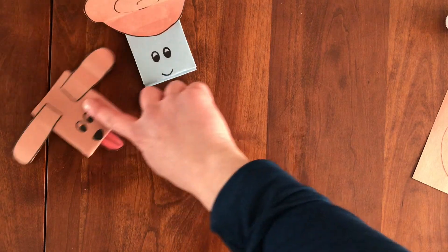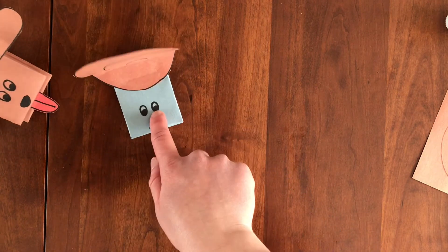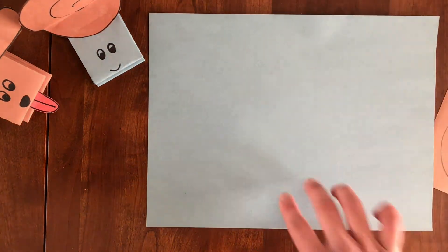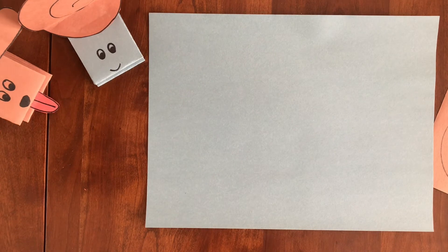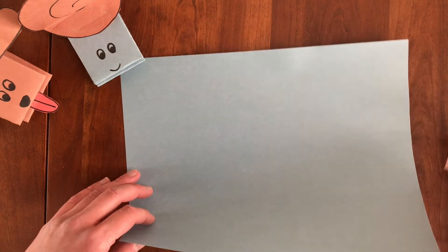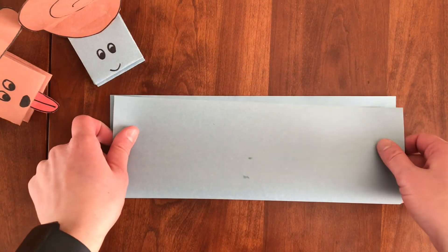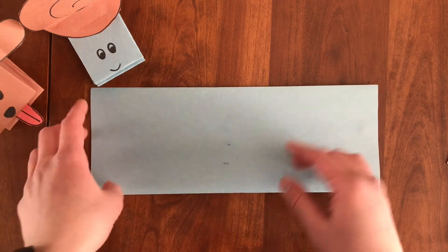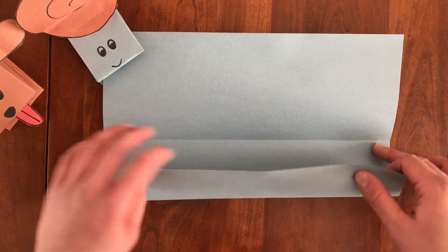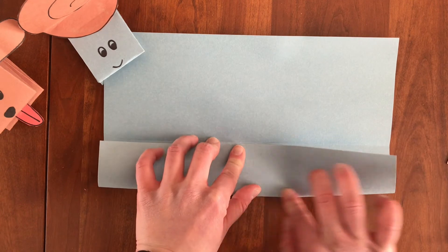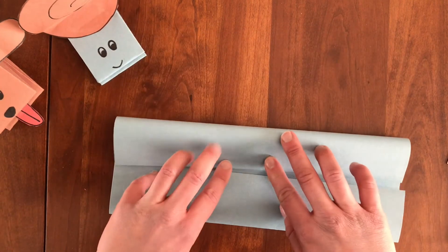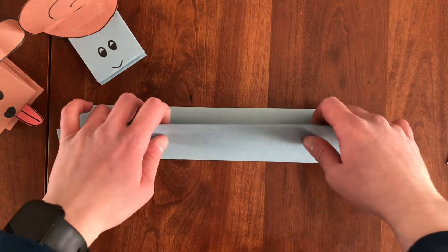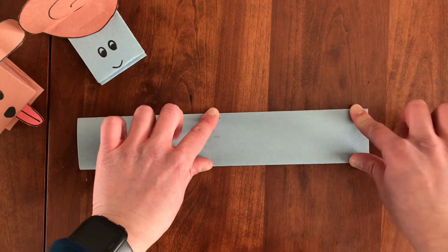All right, so now that we've made puppy, it's time to make snail. So snail, you can use blue construction paper, or you could use gray, just depending on how you want snail to look. And you're going to start the same way. So you're going to fold the blue or gray piece of paper in half. Open back up. Fold the inside in. Fold the other side in. And then you're going to close it. Just like we did with puppy.